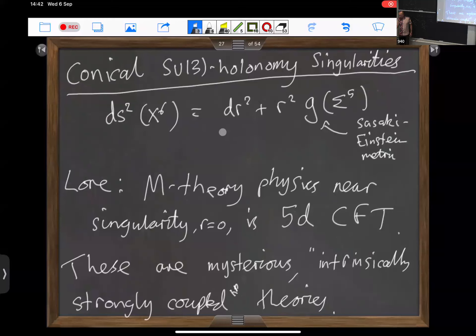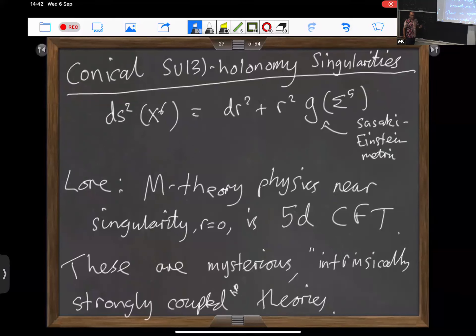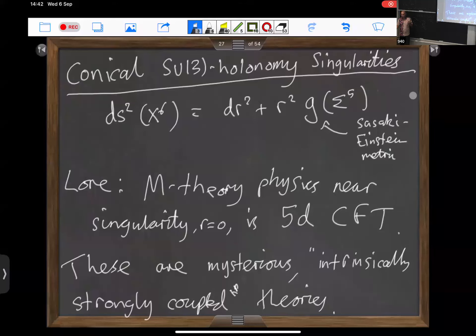There's some lore about these that goes back to Seiberg, Morrison, and Intriligator in the 90s — that the M-theory physics near these singularities is a five-dimensional interacting conformal field theory, typically. Sometimes it can be a free theory of free fields, but mostly it's an interacting theory. These are intrinsically strongly coupled because you're in five dimensions: if you think about gauge fields with gauge coupling G in five dimensions, the dimension of 1/G² has the dimensions of length or inverse mass. That means the coupling diverges in the UV — so these are UV fixed points.